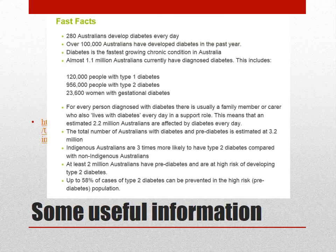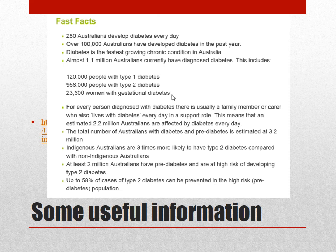Let's look at some facts about diabetes in Australia. 280 Australians develop diabetes every day, and over a hundred thousand have been diagnosed in the past year. It's known as a chronic condition and about 1.1 million Australians are currently diagnosed. That's 120,000 with Type 1 diabetes, 956,000 with Type 2 diabetes, and 23,600 women with gestational diabetes - that's diabetes which occurs in pregnancy. Indigenous Australians are three times more likely to have Type 2 diabetes compared with non-Indigenous Australians.